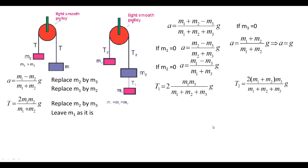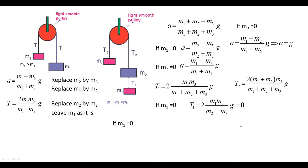Now analyzing T1 under special cases. When m1 equals 0, T1 equals 2·m1·m3/(m1 plus m2 plus m3)·g becomes 0, since m1 appears in the numerator — correctly, because there is no block one, so the string tension must be zero. For T2 when m1 equals 0, substituting (replace m1 by m2, m2 by m3): T2 becomes 2·m2·m3/(m2 plus m3)·g, matching the two-block tension formula.